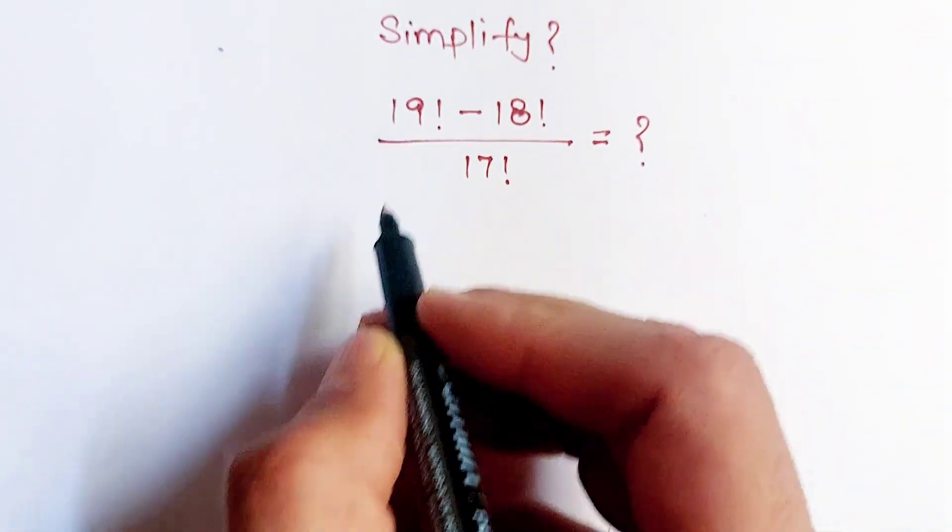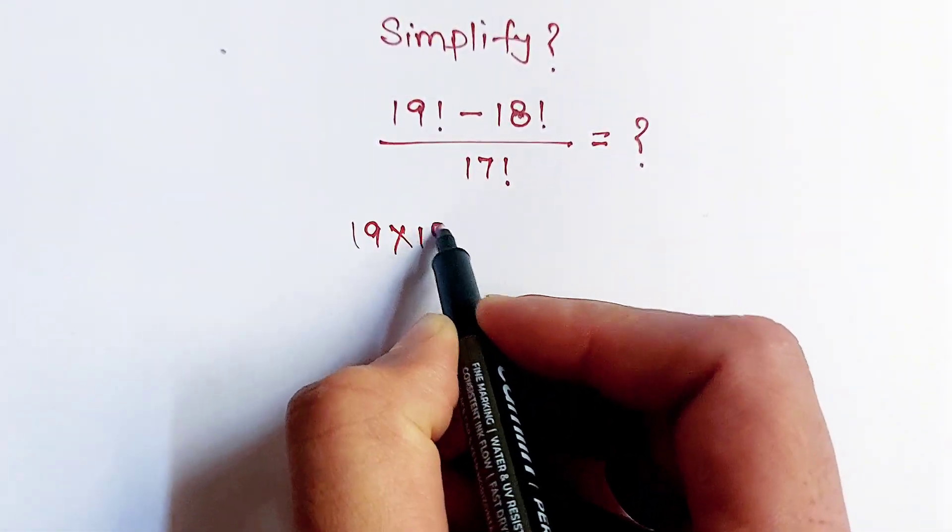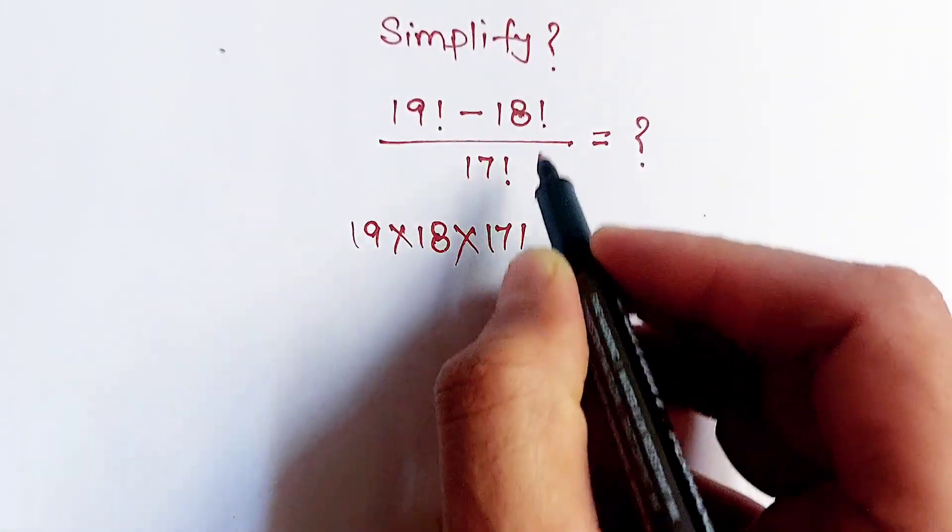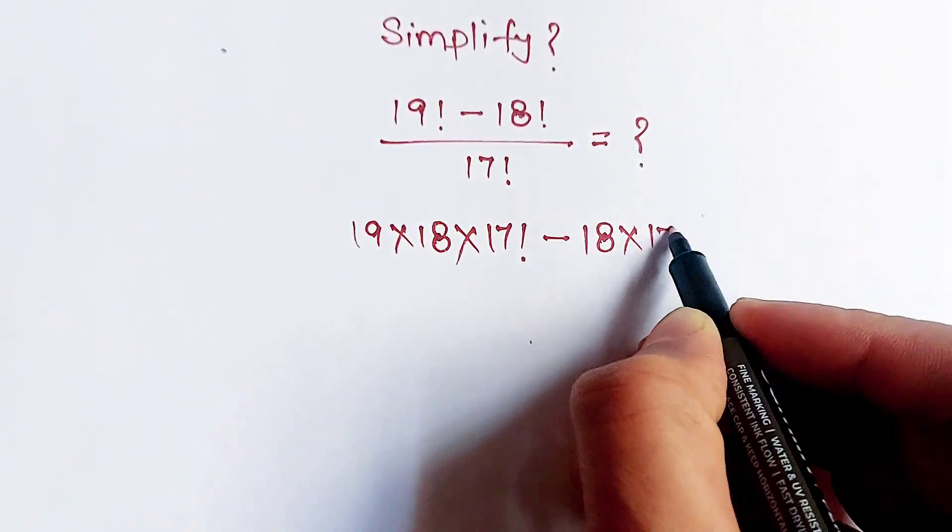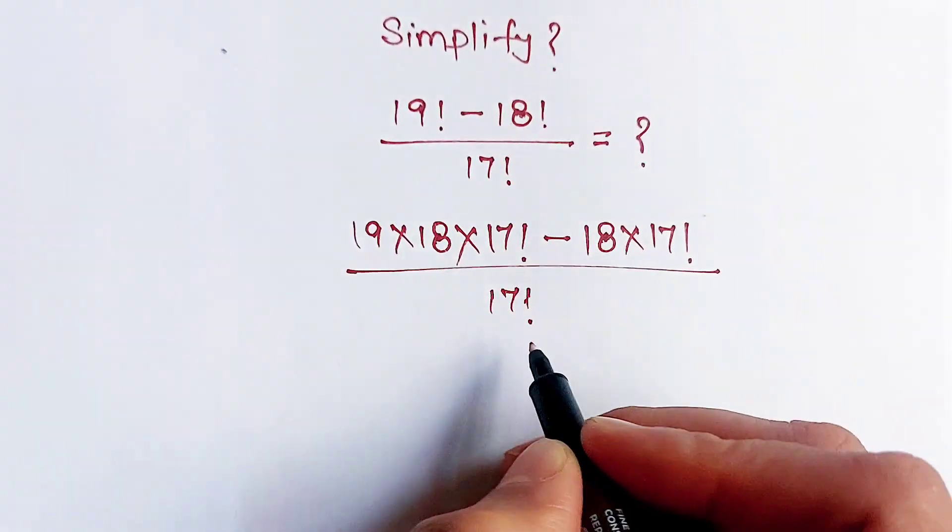Now this 19 factorial can be written as 19 into 18 into 17 factorial. And this 18 factorial can be written as 18 into 17 factorial, and divide by 17 factorial.